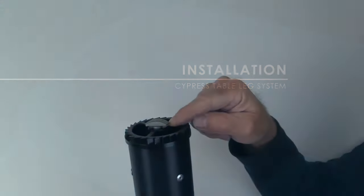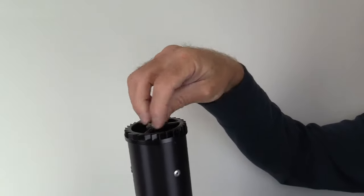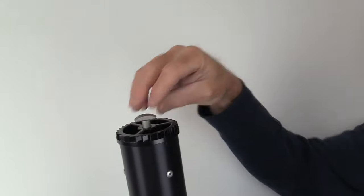To install the Cypress table leg system, ensure the T-bolt is at least three-quarters of an inch away from the bottom of the leg.